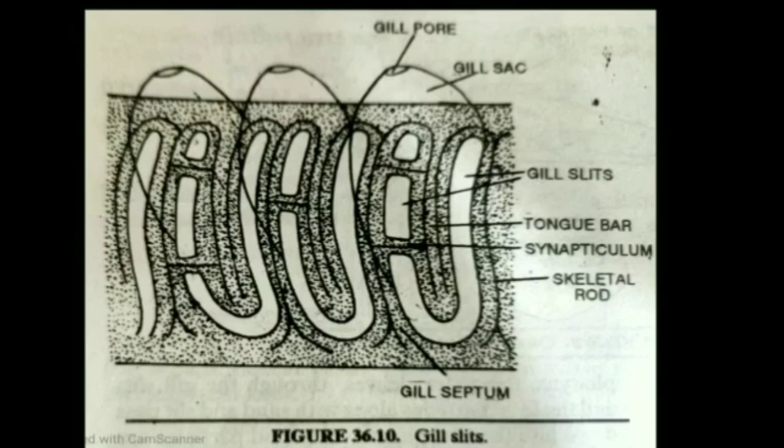Gill slits are present in the branchial region of the trunk. These are U-shaped in structure, but during their development they were not U-shaped — rather they were oval. So during early stages, gill slits were wide and oval structures, but later they become U-shaped due to growth of the tongue bar from the dorsal edge. You can see the tongue bar in the center.